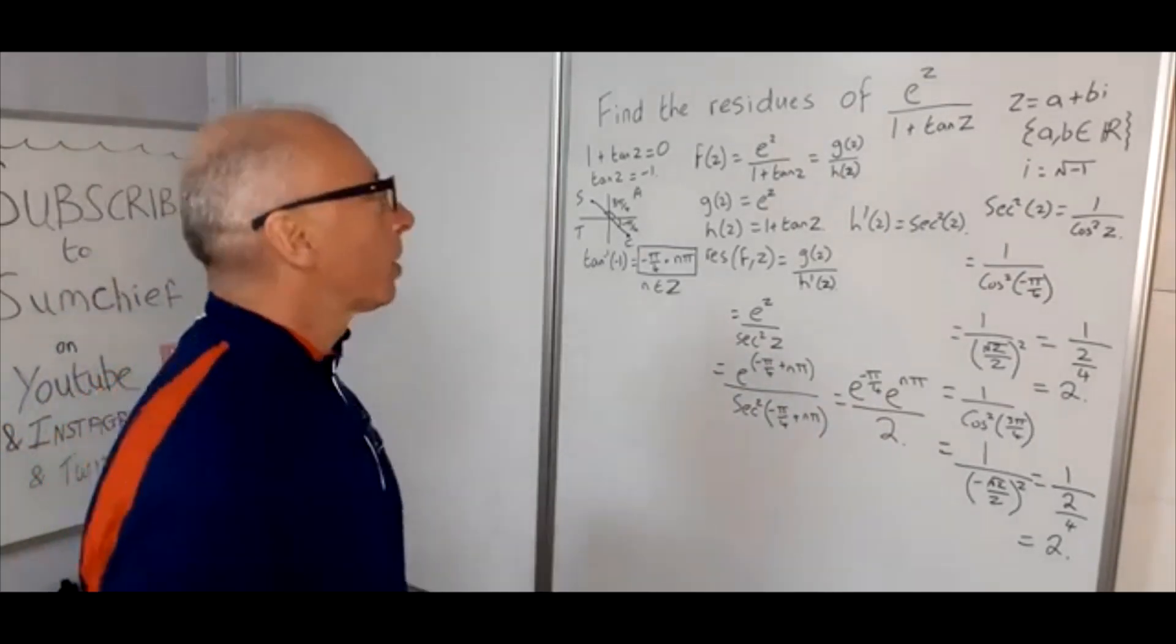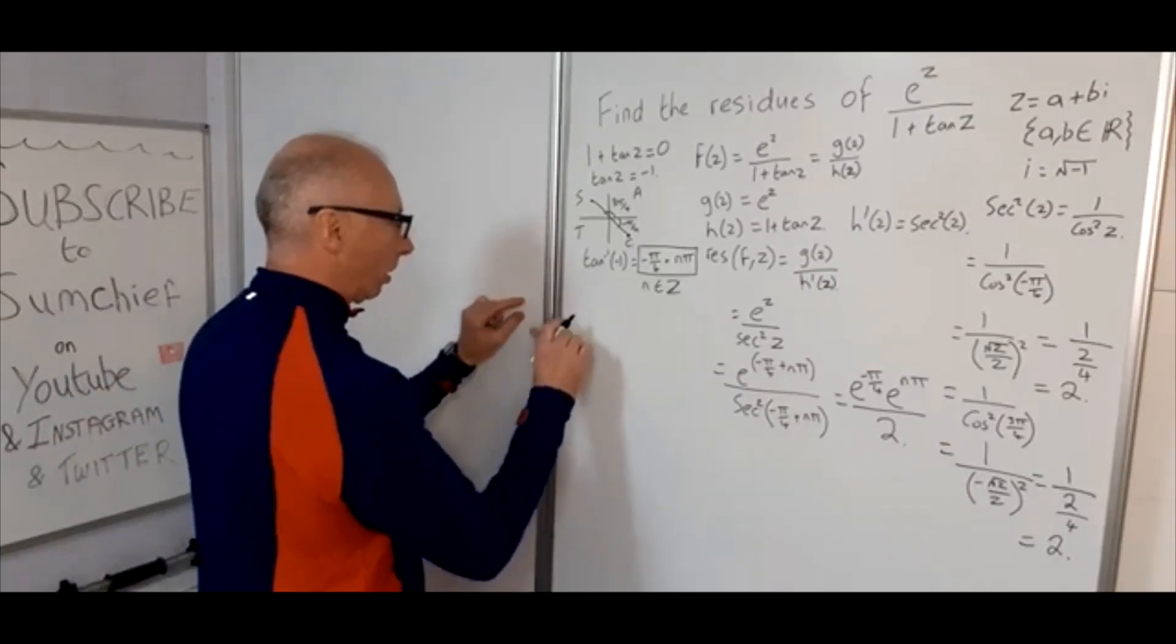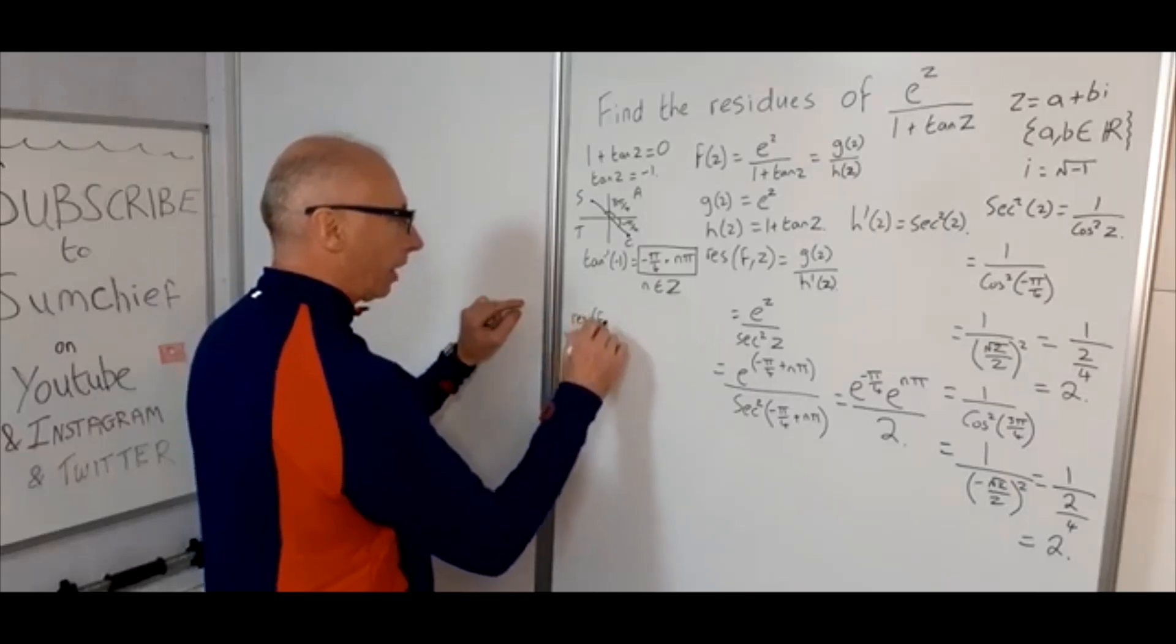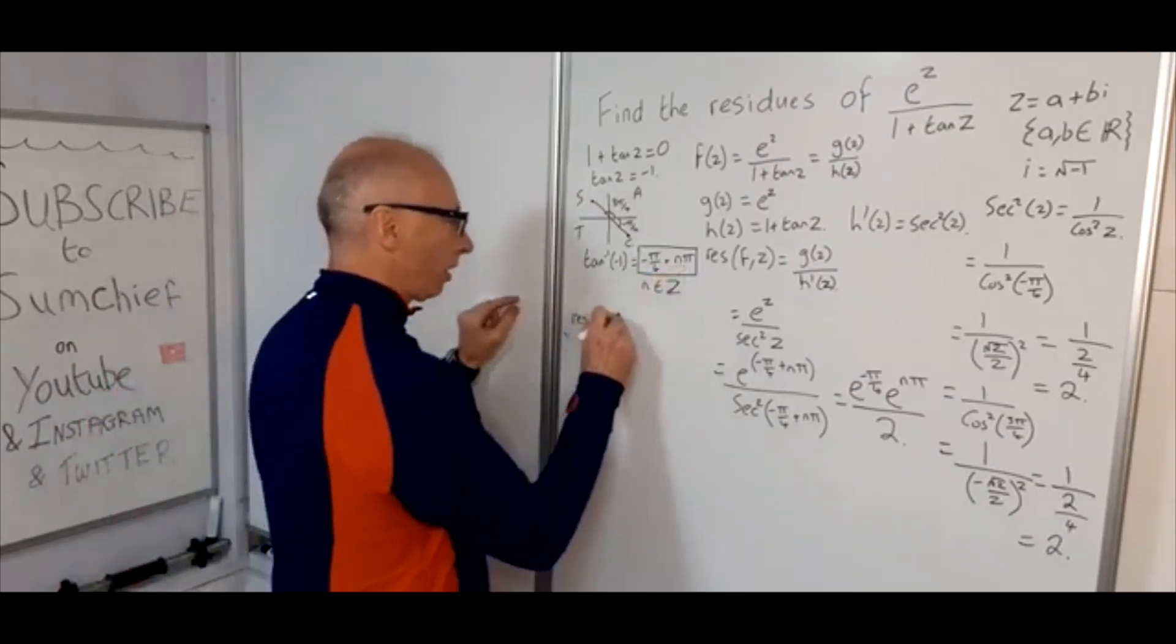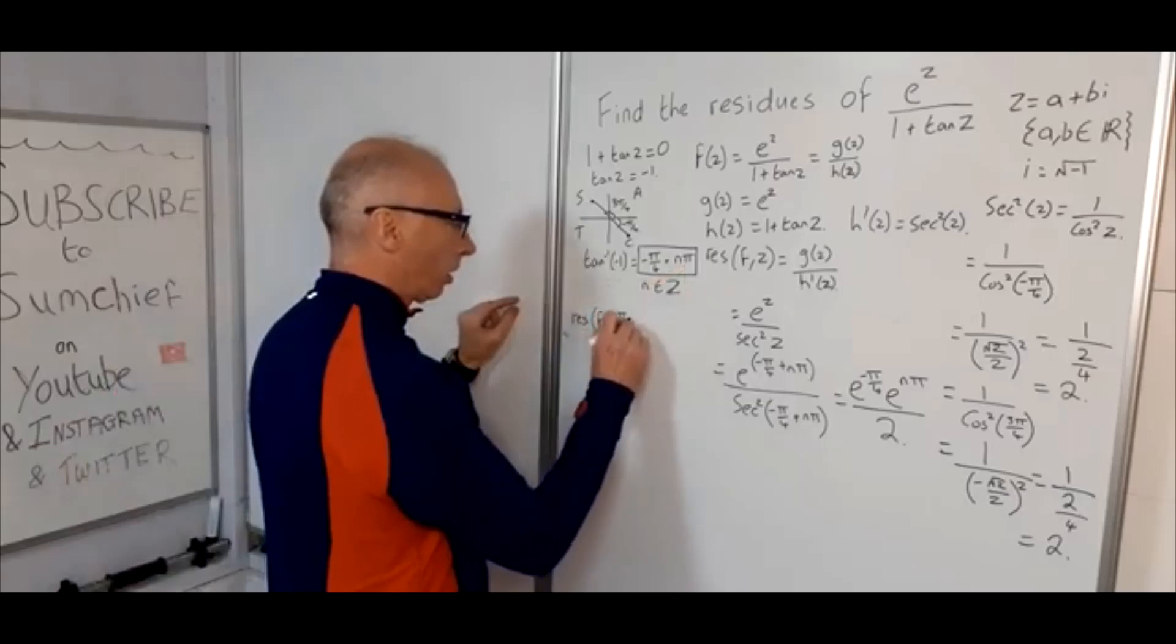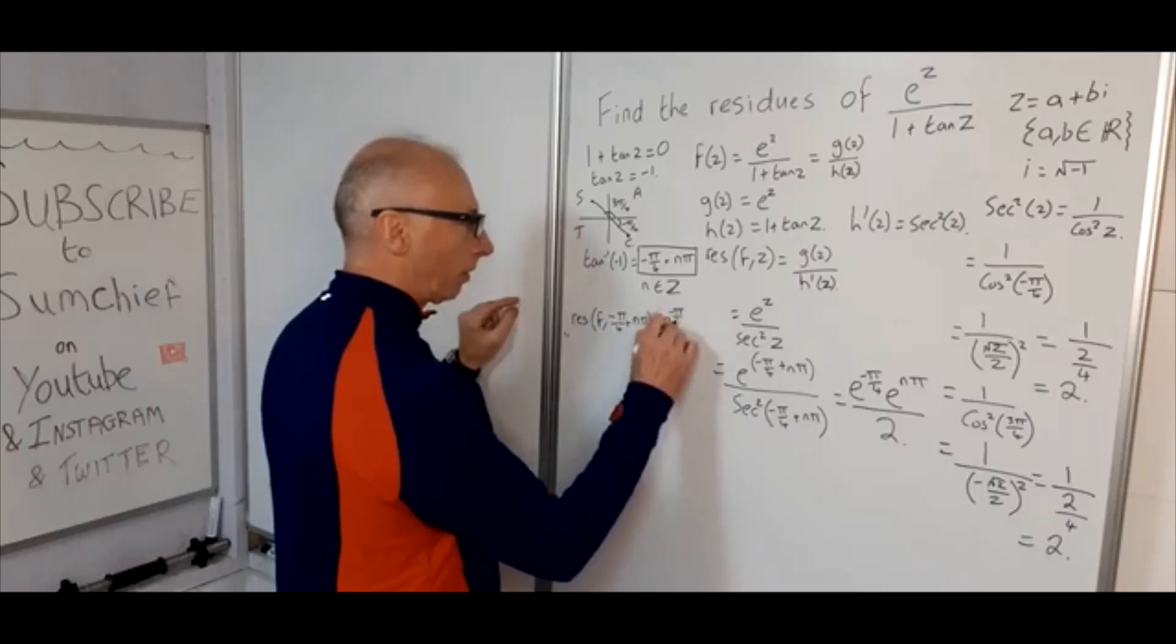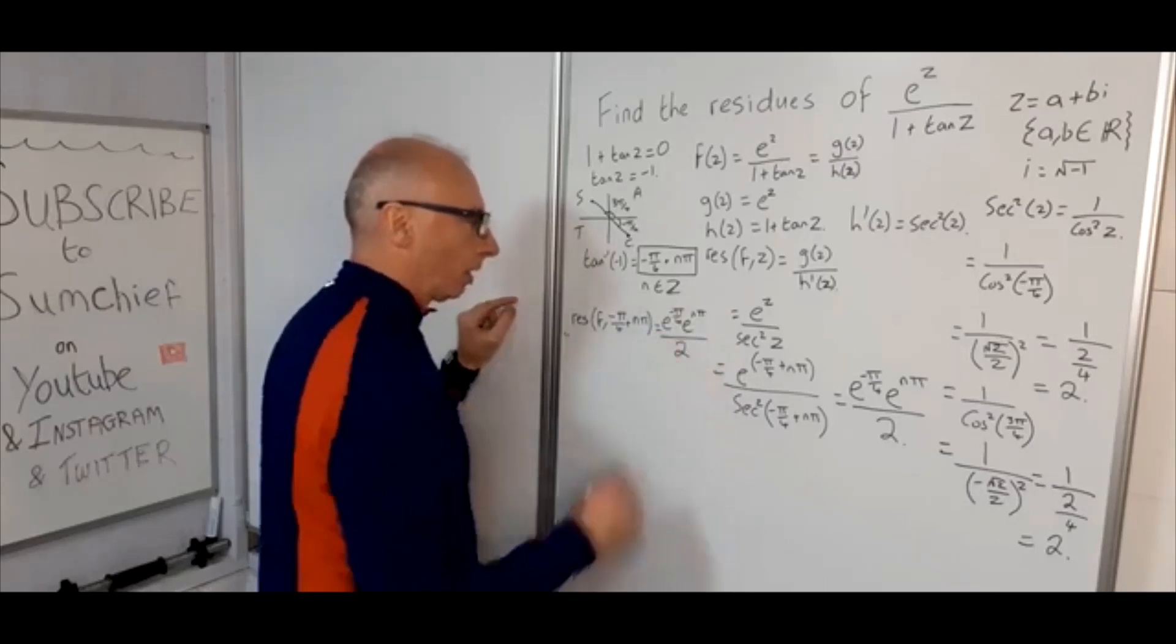So now what I'm going to say is the residues—we're going to write that our function, which is f, and then all the residues are at these points here. So we need to write this in our final conclusion. That equals e^(-π/4) times e^(nπ), all divided by 2.